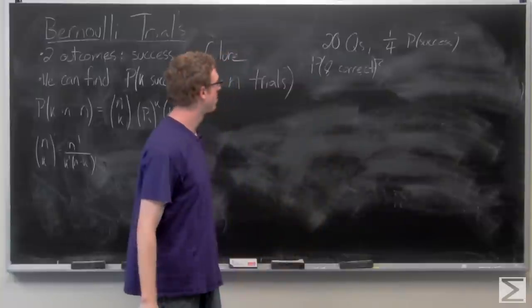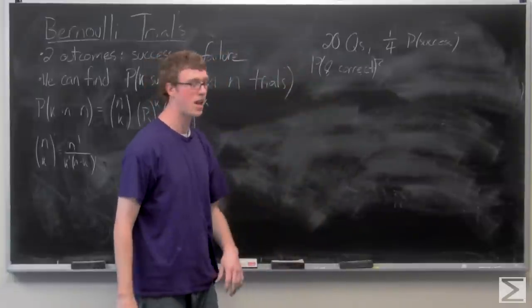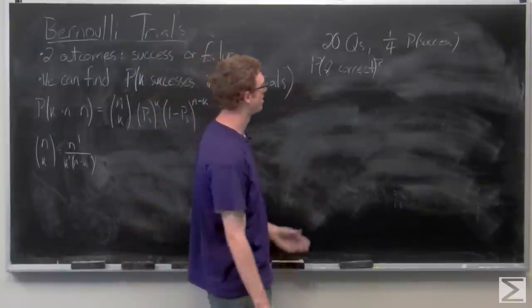So we're going to go ahead and plug into our formula using 20 as n, eight as k, and one-fourth as p underscore s.